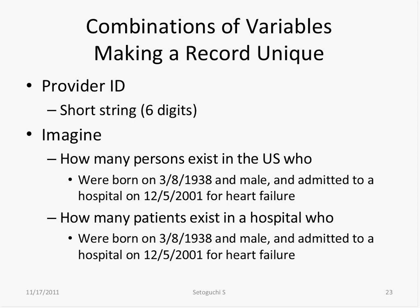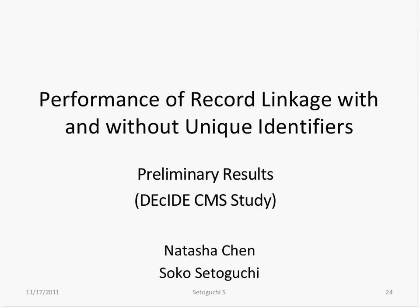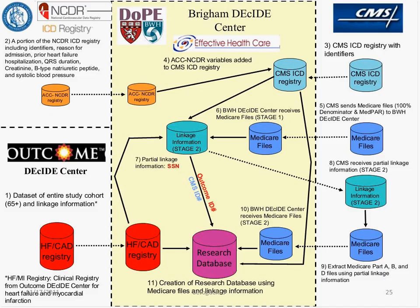In our ongoing ICD study, we had a unique opportunity to validate linkage with multiple non-unique identifiers and compare it to linkage with unique identifiers. We are linking multiple registries to Medicare data — the Outcome Sciences registry has no unique identifiers, so we rely on non-unique identifiers, while the CMS ICD Registry had social security numbers for most patients, allowing us to compare performance of linkage with versus without social security. Much of this analysis was done by Natasha Jen.